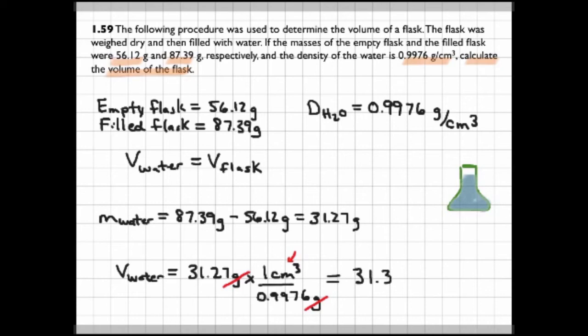Then doing the math, we get 31.35 centimeters cubed, and that is the volume of the water, and then of course, also the volume of the flask.